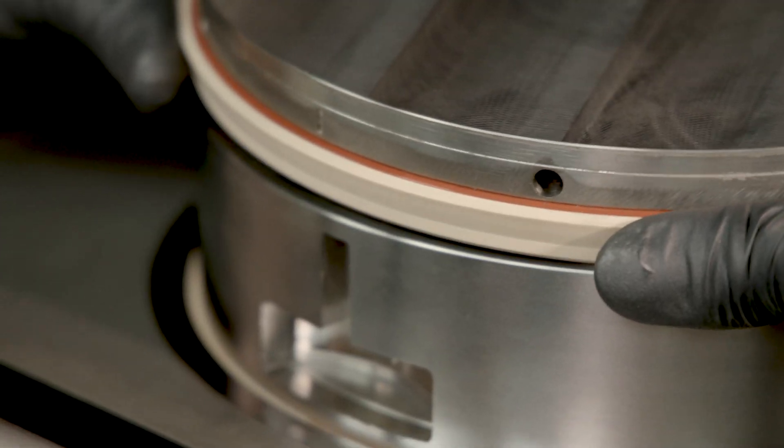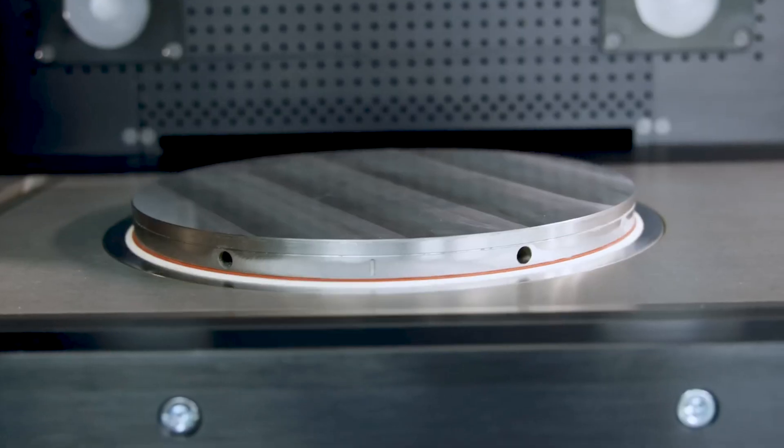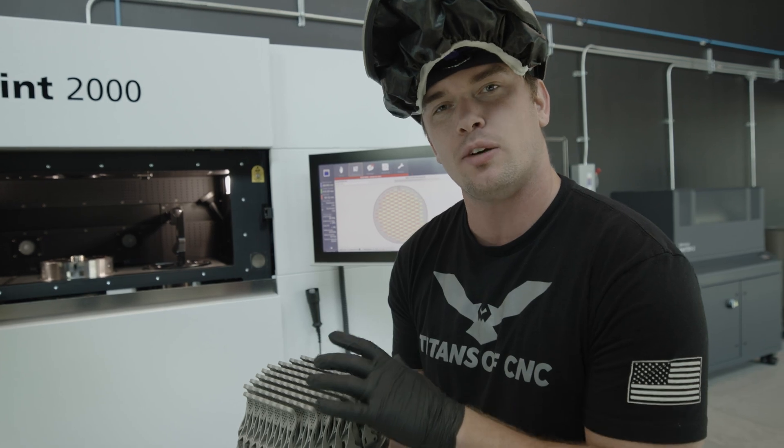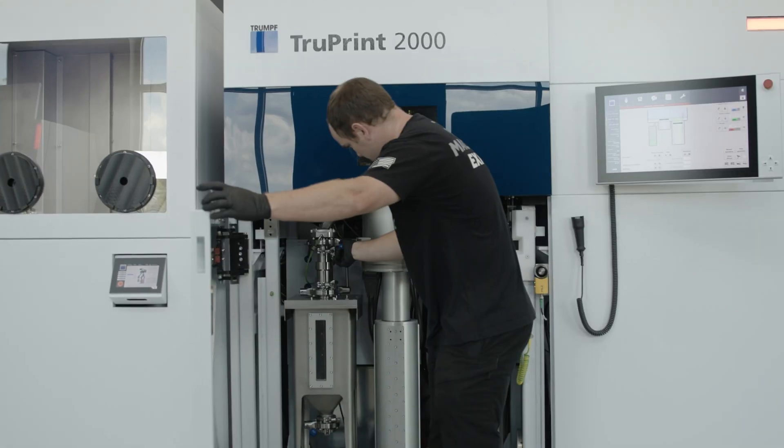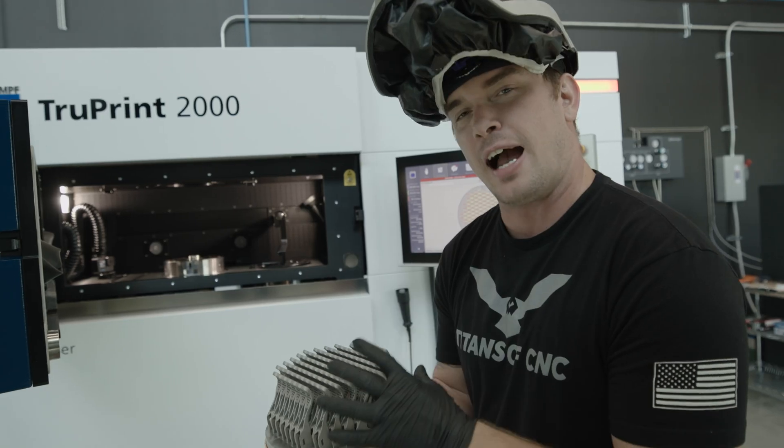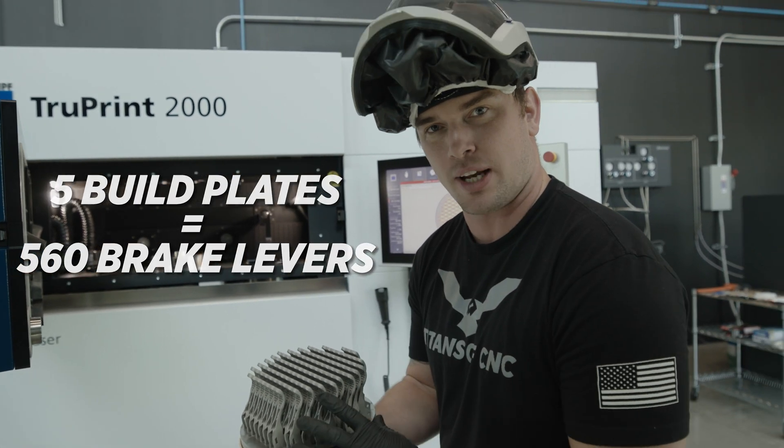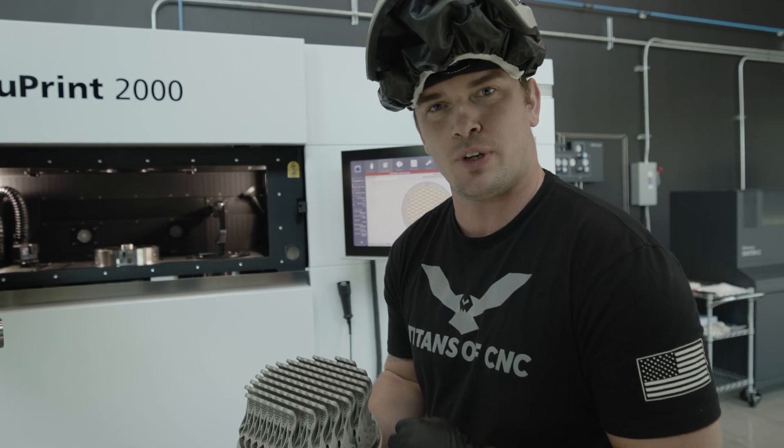After this print's finished, all we have to do is unbolt this build plate, install a new build plate, and then we can start up another print. We don't have to add any additional powder because this print only took one-fifth of the volume of our supply cylinder. If we were to print five of these, we would have 560 titanium brake levers, and we barely had to lift a finger to do it.